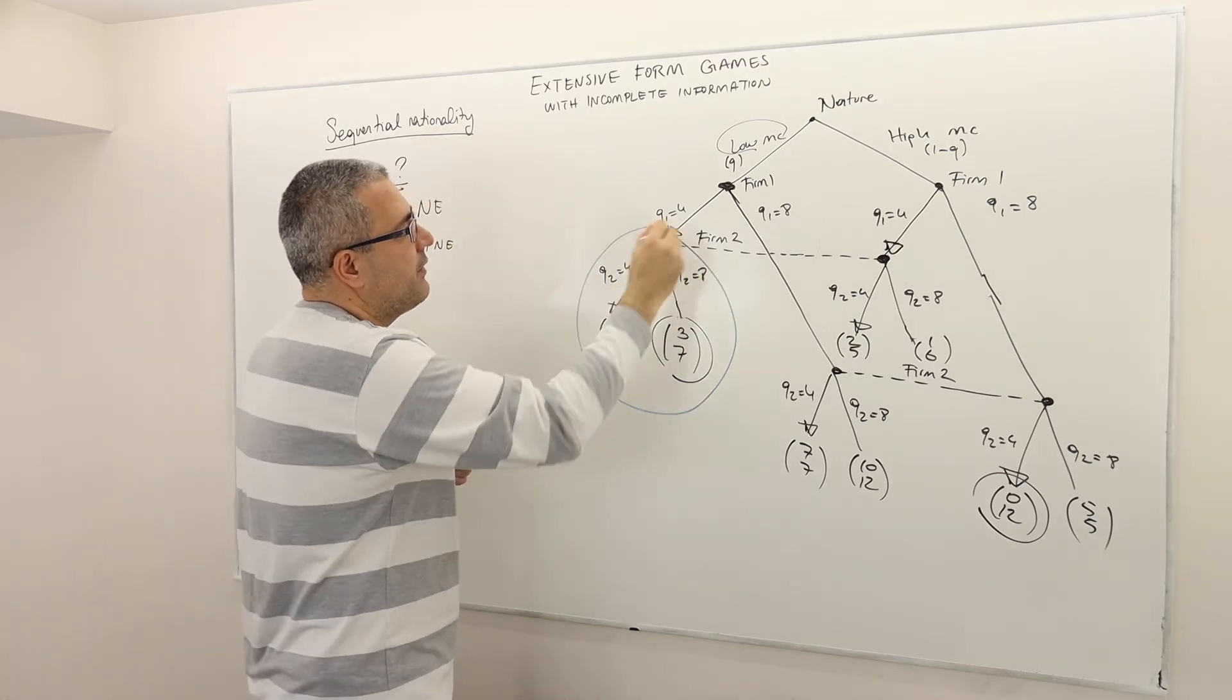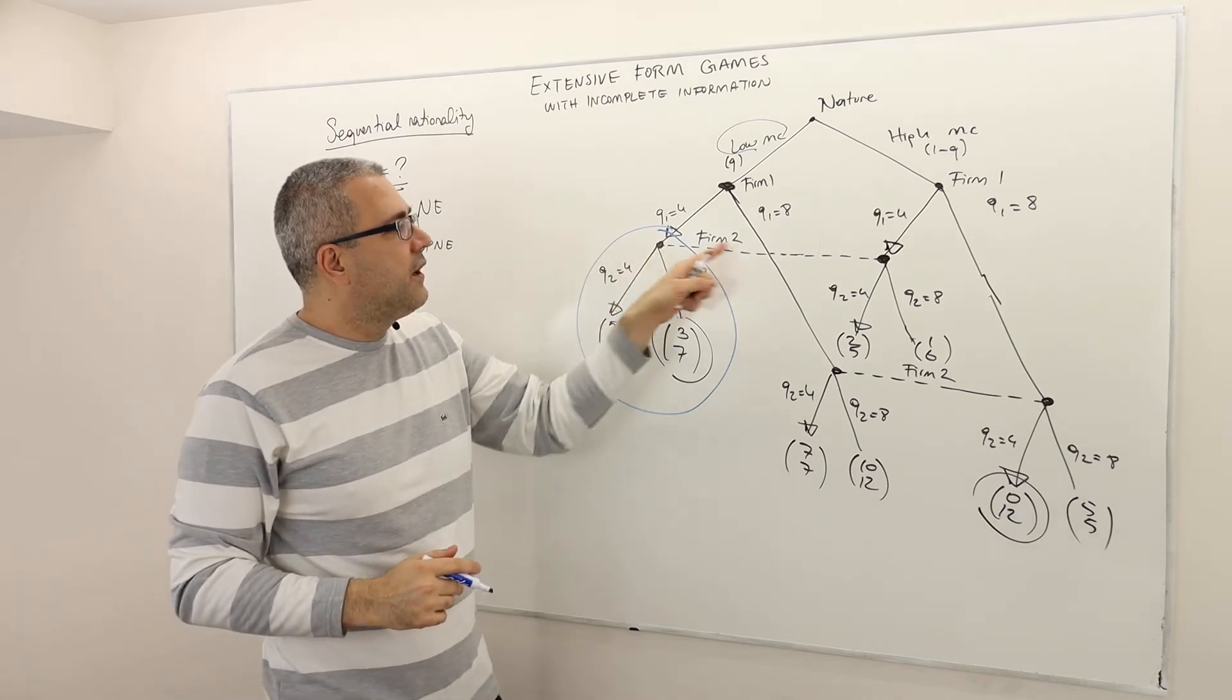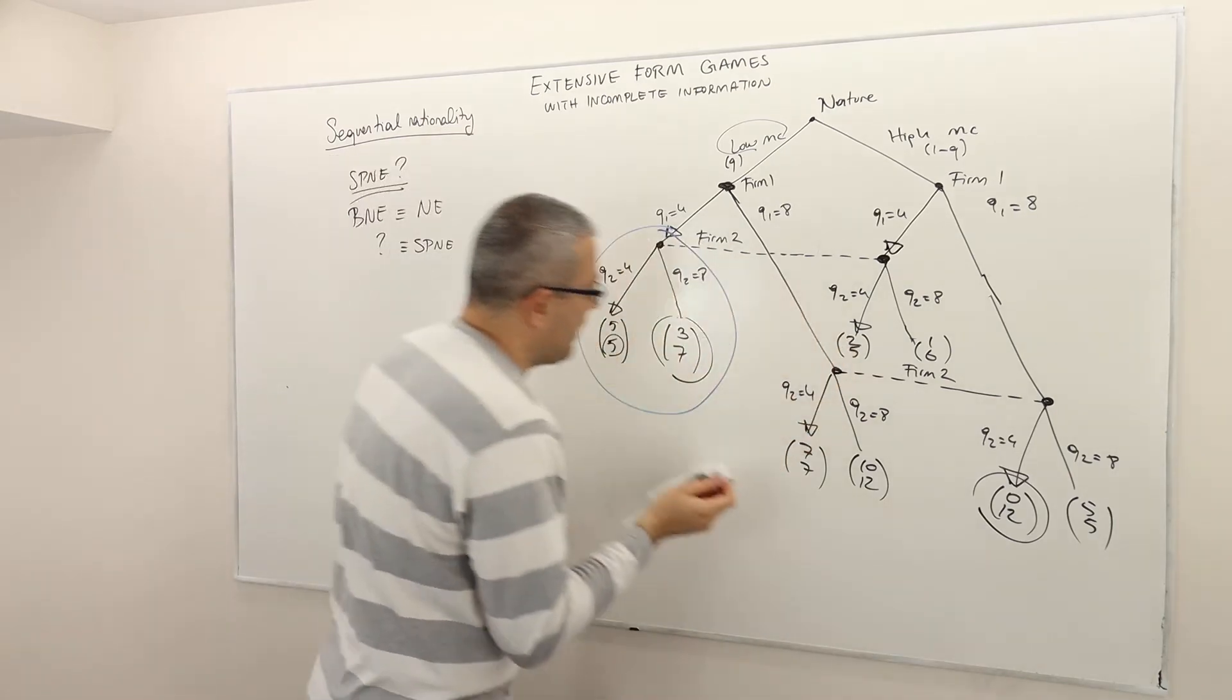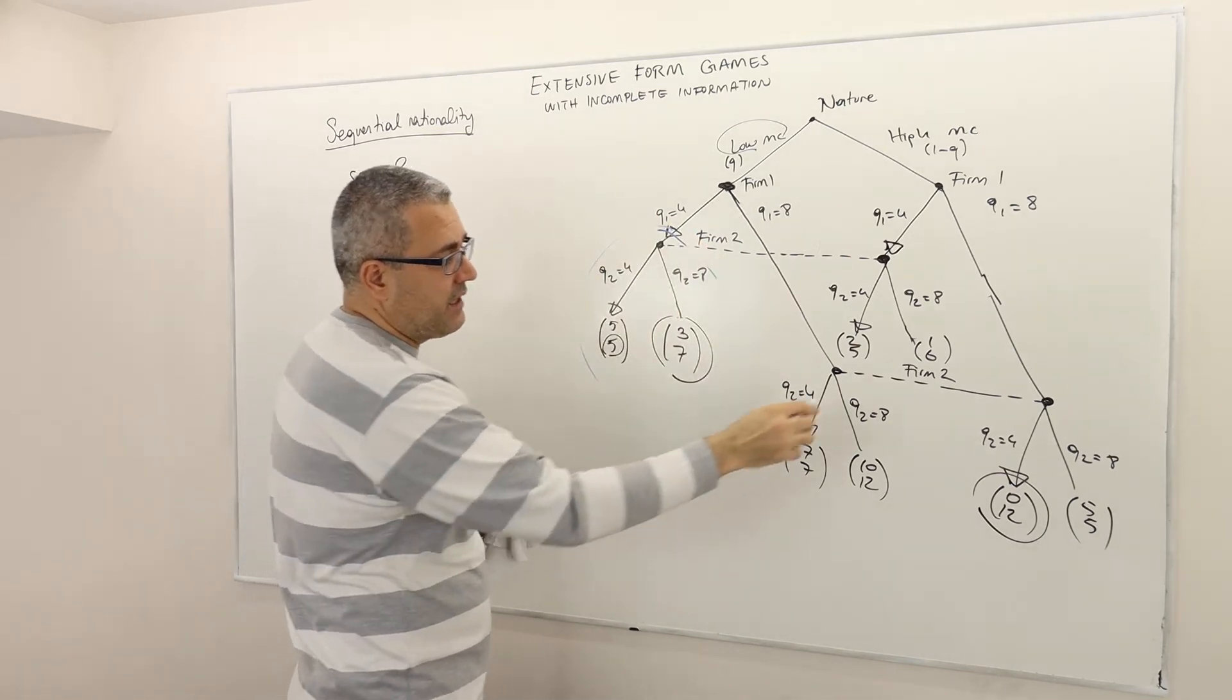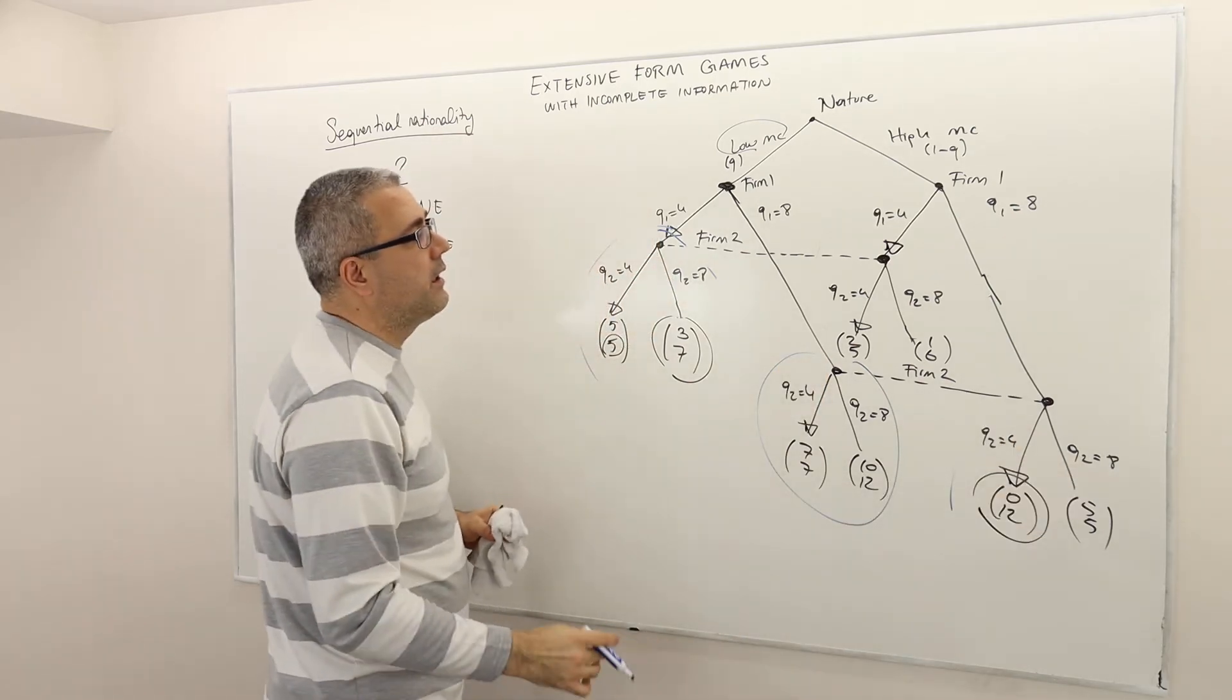Is this a subgame, a proper subgame? No. Why? Well, because it breaks firm two's information set. So it cannot be a subgame. Bad news. What about, well, with exactly the same logic, this is not a subgame. This is not a subgame.